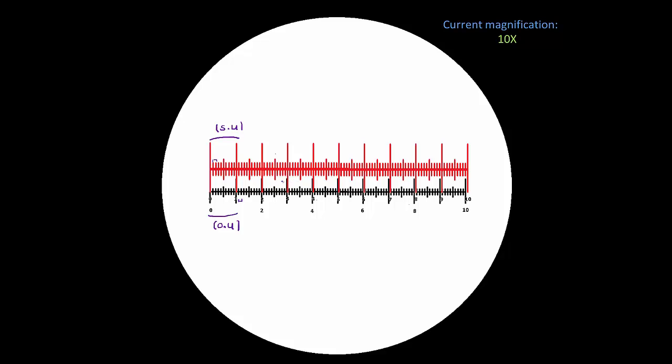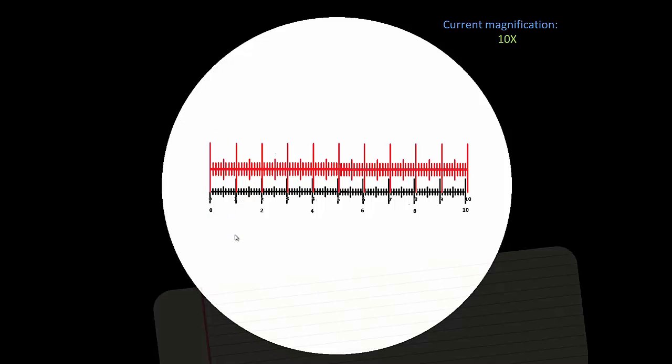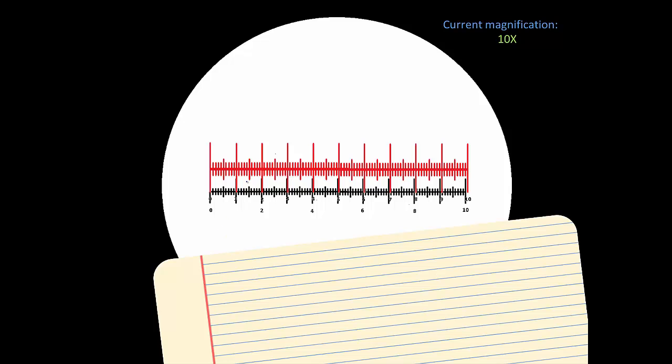That being said, we are now ready to write down everything that we know, and everything that we can observe. Let's begin by writing down what we already know. The entire length of the stage micrometer, or the red ruler, is known to us. Ten stage units, or the entire length, is one millimeter.